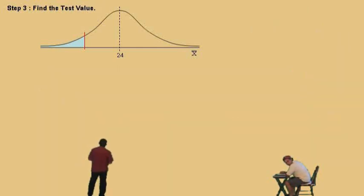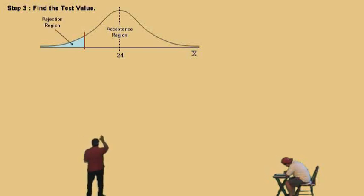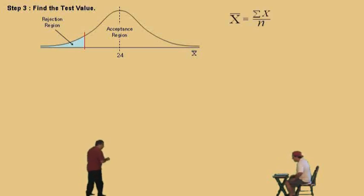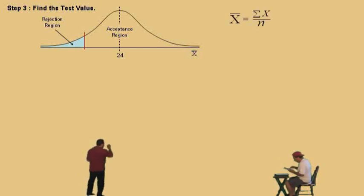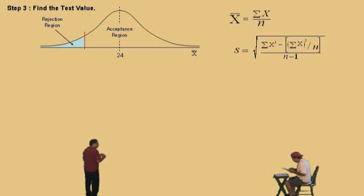Step three: find the test value. The middle region is the acceptance region and the tail is the rejection region. We're going to find the sample mean for our 30 data values. We need to sum up all those data values and divide by N, which is 30. Our sample standard deviation will also be needed to calculate our Z test value.